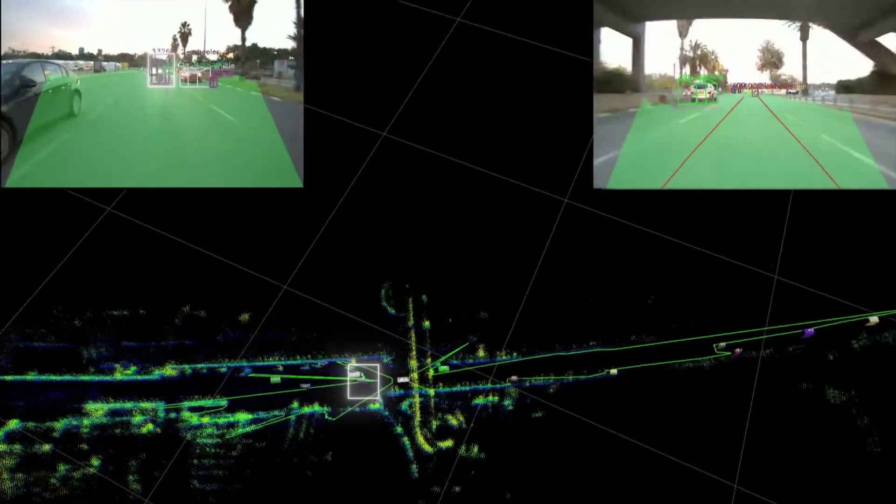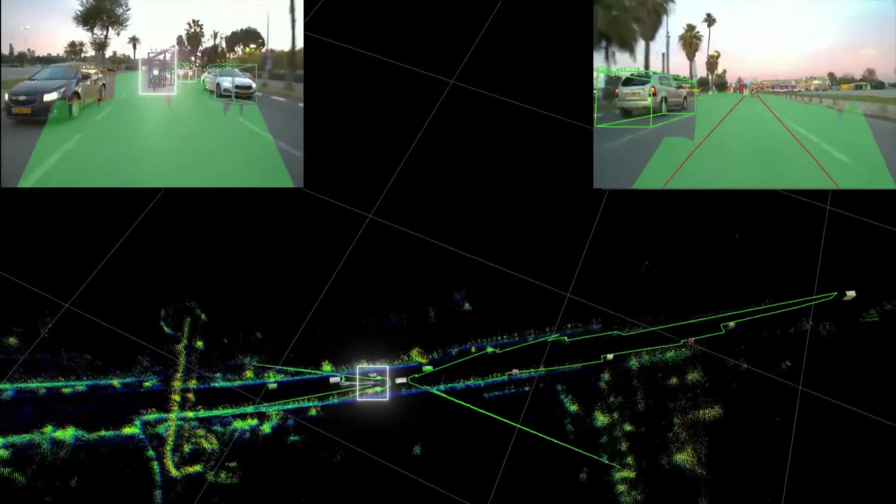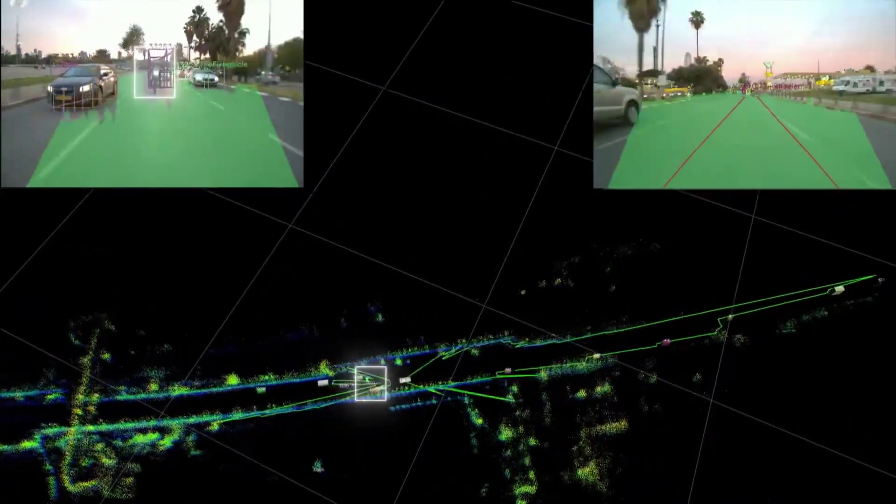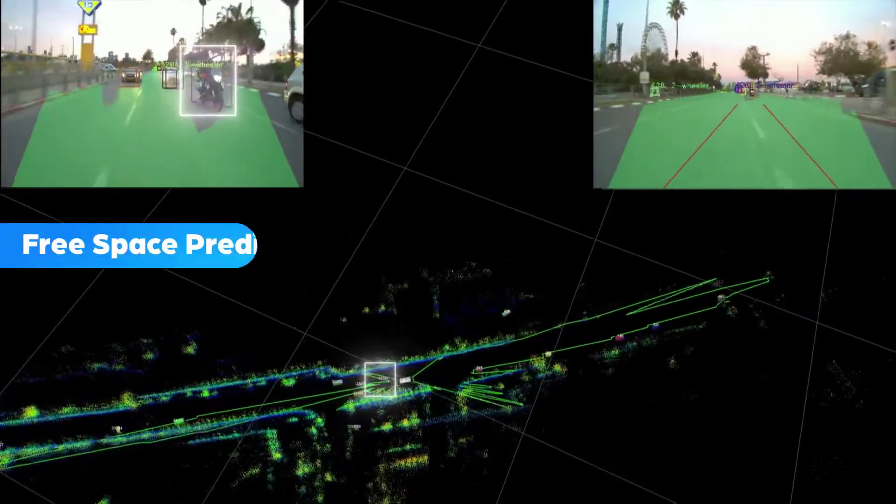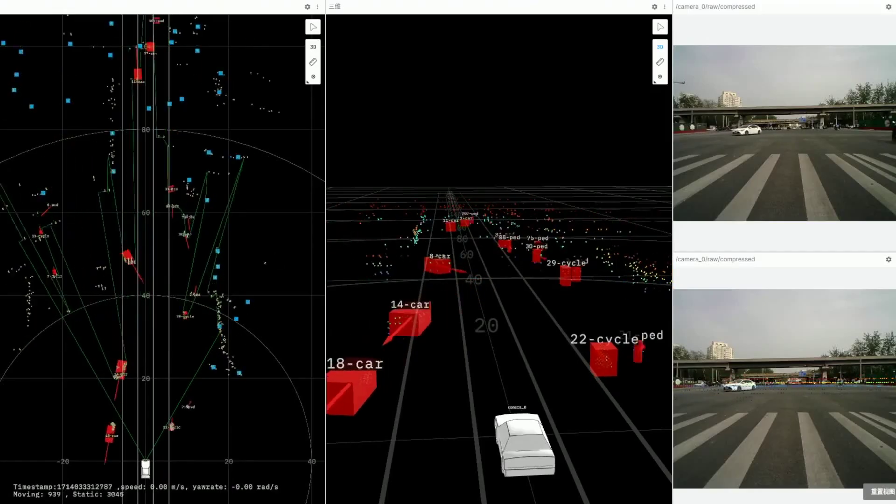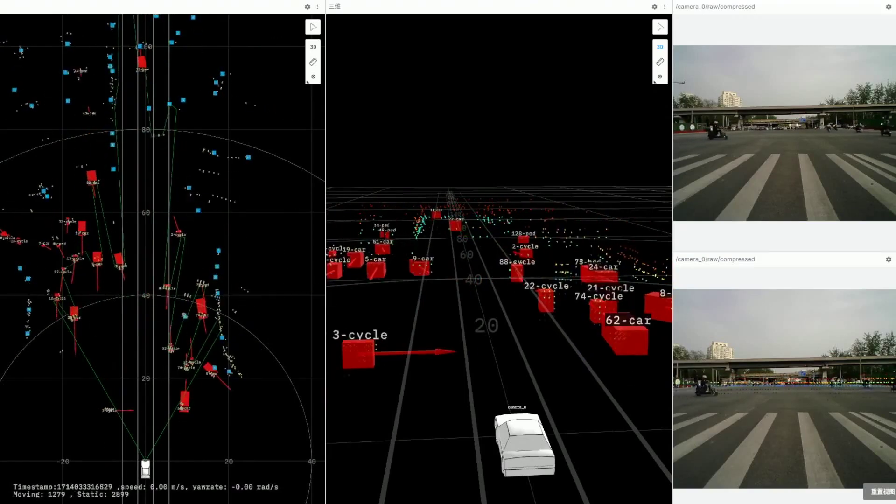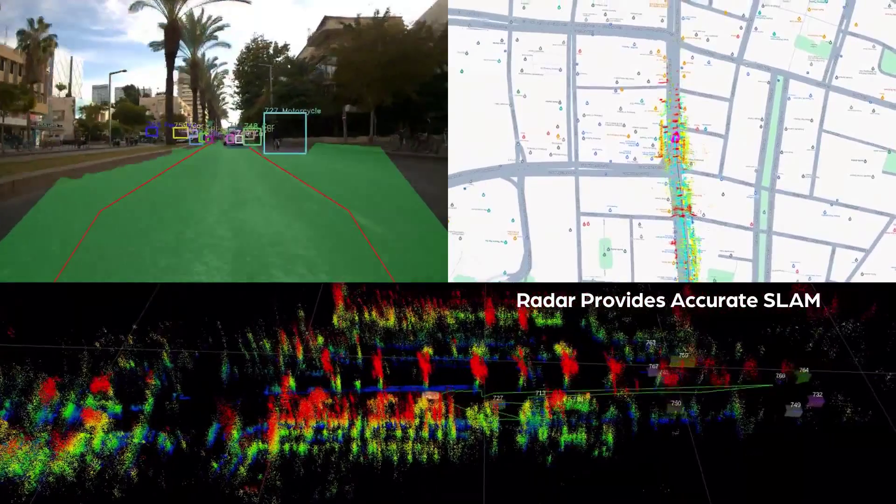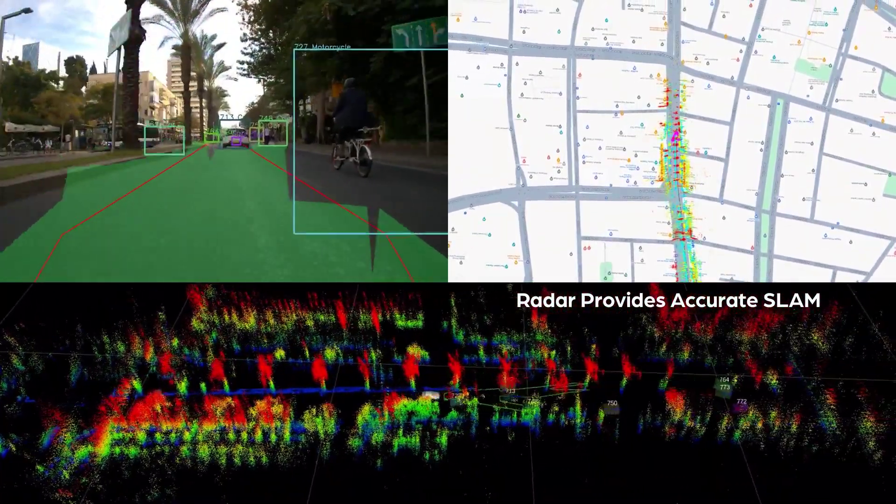To support this growth, Arbe and Sensrad signed a comprehensive support and maintenance agreement for Sensrad's 4D imaging radar program. Under this agreement, Arbe will provide ongoing services, including design reviews, system debugging, calibration, software and hardware updates, and help with meeting international standards, ensuring continued reliability and optimization of the radar systems powered by Arbe's technology, as well as a recurring revenue stream.